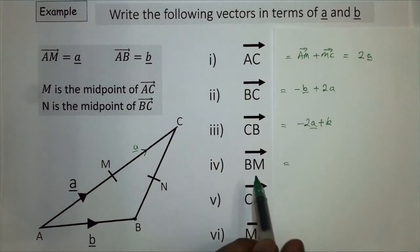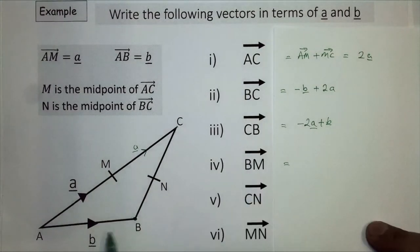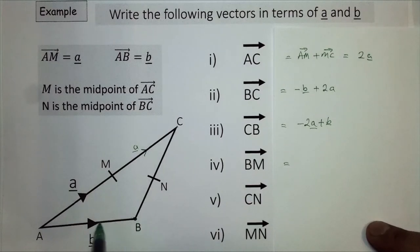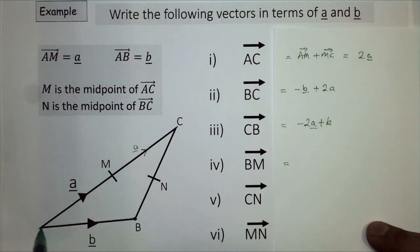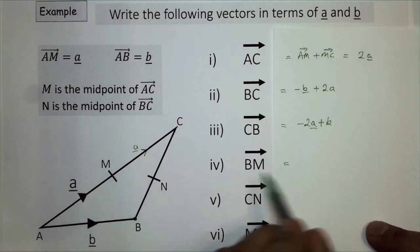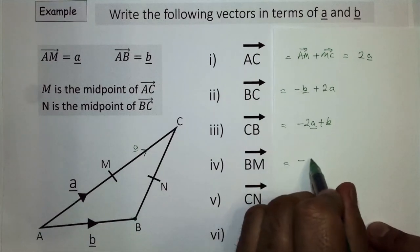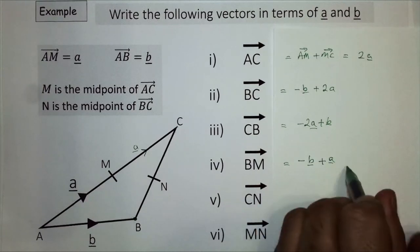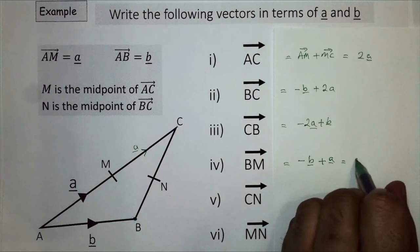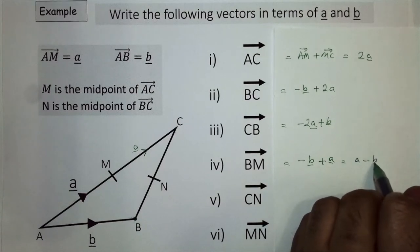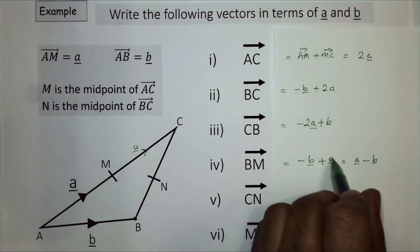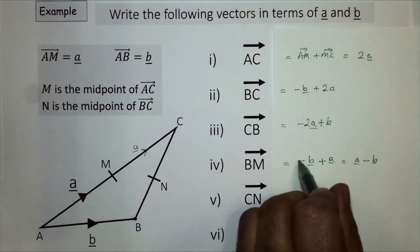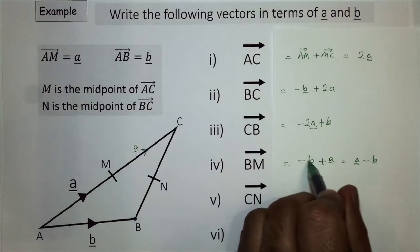For B to M, following the path from B around: minus b plus a. So BM is equal to minus b plus a, which I can also write as a minus b, making sure I keep the negative with the b vector.